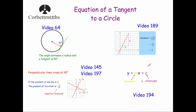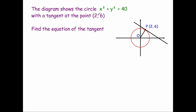Let's have a look at our example. The diagram shows a circle x² + y² = 40 with a tangent at the point (2, 6). The tangent touches the circle at that point, and we're trying to find its equation. I've drawn the radius — the line from the centre O (the origin) to the point — and we know the radius and tangent are perpendicular to each other.